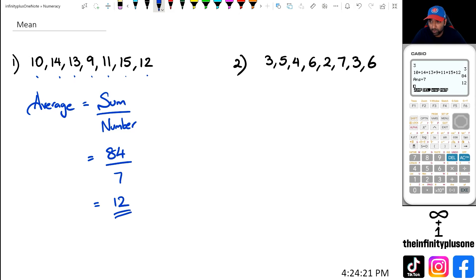And likewise, with question number two, I guess instead of average, I might write it as mean. And instead of sum, I might just write it as total divided by number of numbers here. So we're going to do the total first, which means we've got 3 plus 5 plus 4 plus 6 plus 2 plus 7 plus 3 plus 6. And that's going to give us 36.